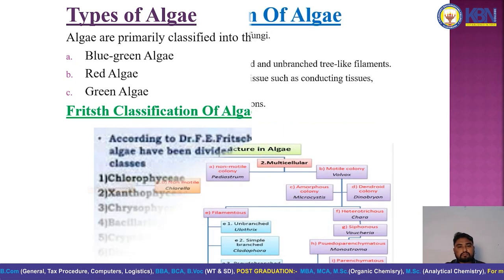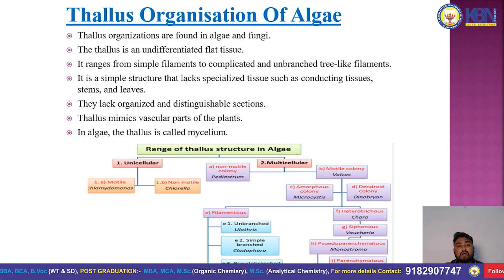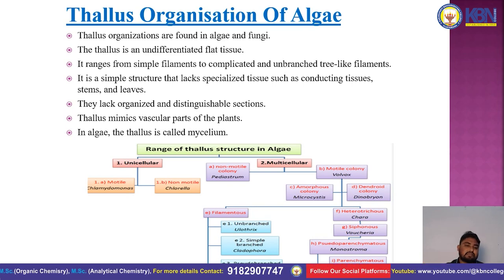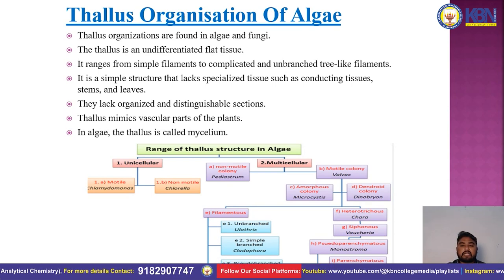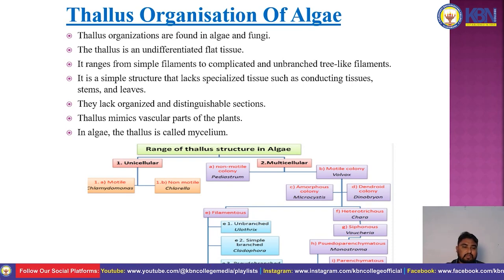The thallus organization of algae is found in algae and fungi. The thallus is an undifferentiated flat tissue ranging from simple filaments to complex branched or tree-like filaments. It is a simple structure that lacks specialized tissue such as connective tissue, stems, and leaves. The thallus mimics the vascular parts of the plant. In algae, the thallus is called amnion-cellium.